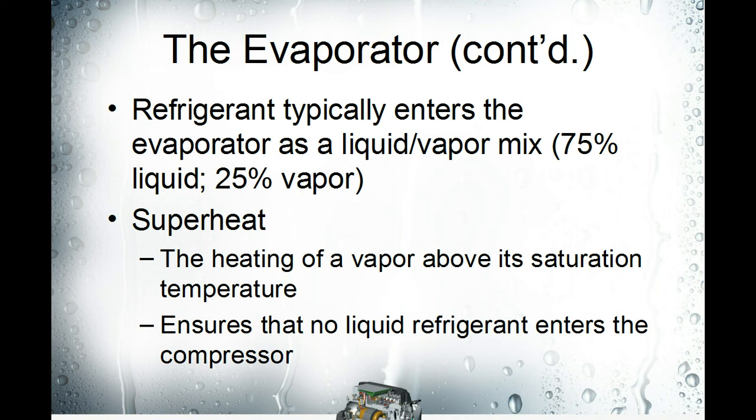That change of state is what happens through most of the evaporator. Near the end of the evaporator, the vapor becomes superheated and rises above the saturation temperature. The reason we have superheat is to make sure that we have no liquid refrigerant going back to the compressor, because that's what damages valve plates and burns up compressors.